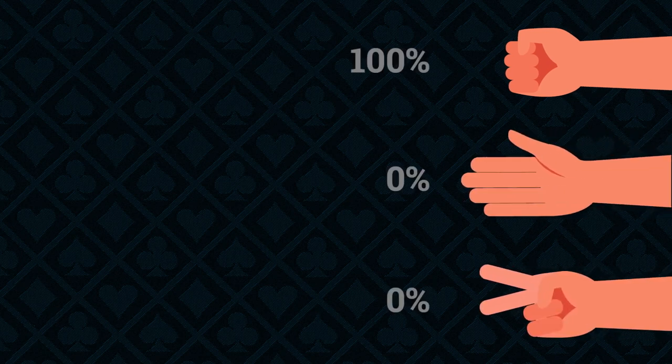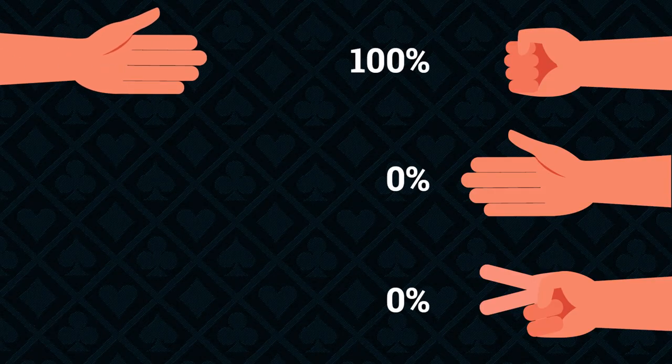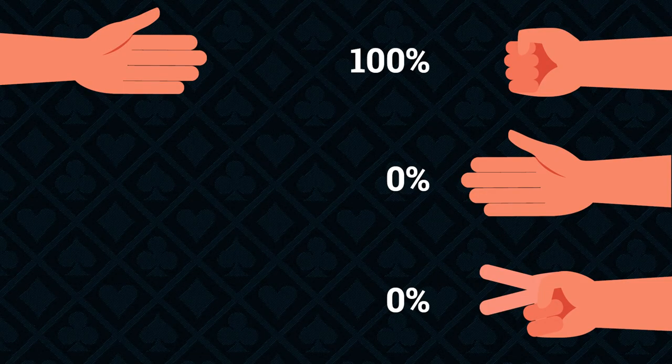Imagine your rock paper scissors opponent is not very experienced and decides to choose rock with 100% frequency every single time. If you continue with your GTO RPS strategy, your long-term results would still be a tie. But we should ask ourselves: is this our best strategic response? Clearly no — why choose randomly one third of the time when you know your opponent is always going to choose rock? Ideally, you'd switch to choosing paper every single round, winning 100% of your games.